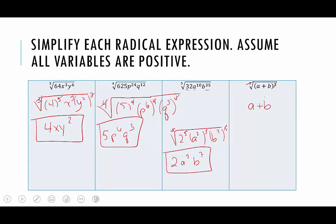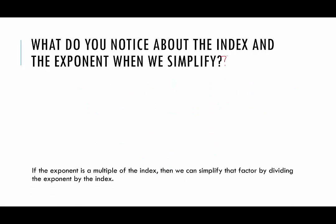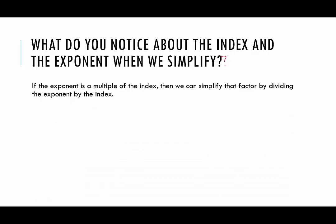Did the shortcut work? 6 divided by 3 is 2; 24 divided by 4 is 6; 12 divided by 4 is 3. So what do we notice about the index and the exponent when we simplify? If the exponent is a multiple of the index, then we can simplify that factor by dividing the exponent by the index. For example, if we have the nth root of x to the k times n — meaning one of the factors of the exponent is n — this would simplify to x to the k. We want to be careful: if we can't assume variables are positive, we could run into trouble with absolute values. But this is a nice shortcut, and it works as long as the variable has an exponent that is a multiple of the index.